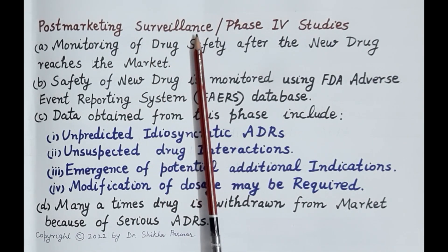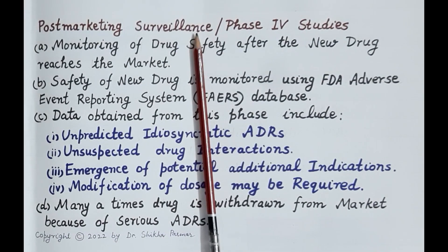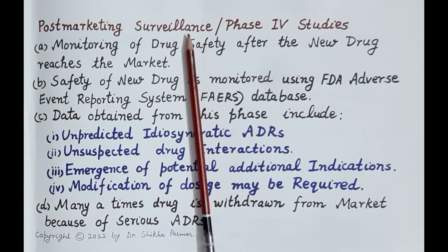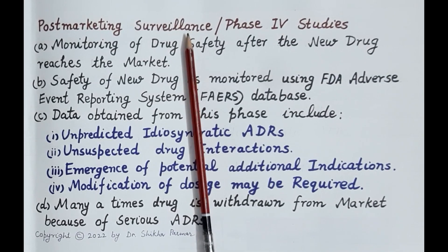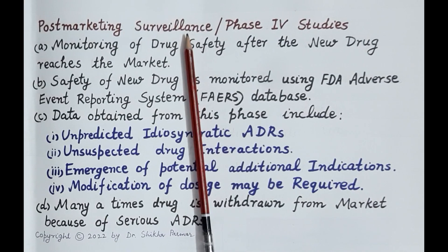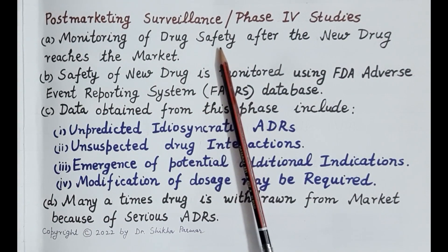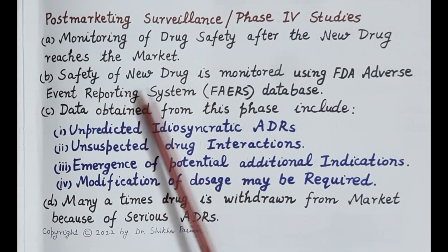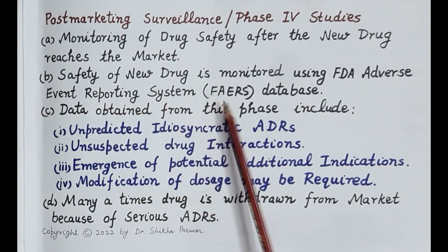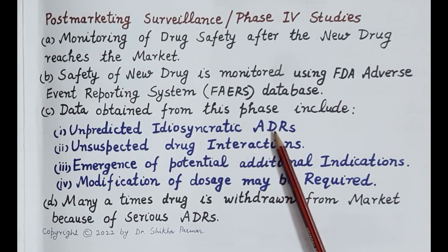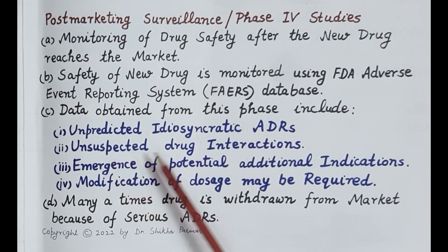The last step in new drug development is post-marketing surveillance, or Phase 4 studies. These trials are conducted on the new drug after it reaches the market. Post-marketing surveillance refers to the monitoring of drug safety after the new drug reaches the market. The primary purpose is to identify previously unrecognized adverse effects. The new drug is tested in a very large patient population over a very long period of time, and safety is monitored using the FDA Adverse Event Reporting System (FAERS) database. Data from this phase includes unpredicted idiosyncratic adverse drug reactions and reporting of unsuspected drug interactions.